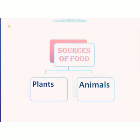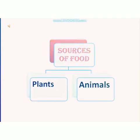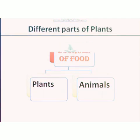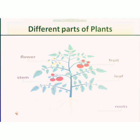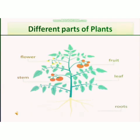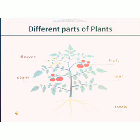As we discussed in our earlier video, sources of food is the place or the living organism from which we obtain our food. The two main sources we discussed are plant sources and animal sources. We also discussed different parts of the plant — roots, stems, flowers, leaves, and seeds. This topic is already covered in the earlier video.